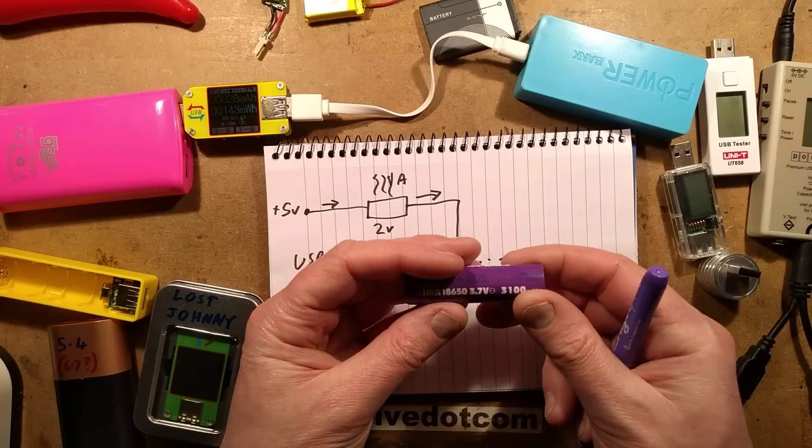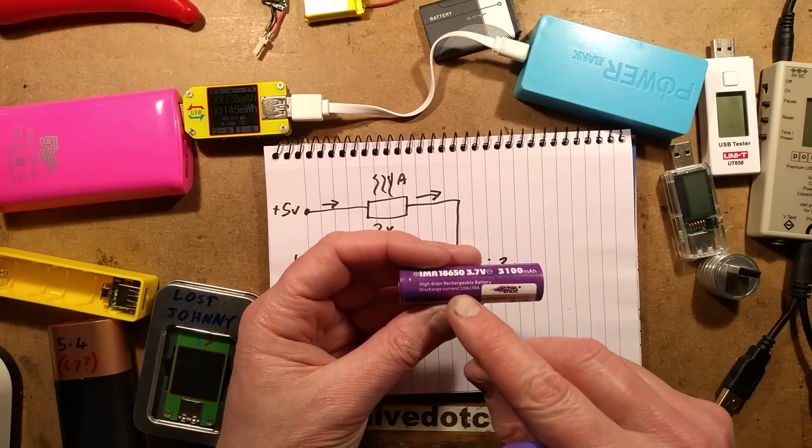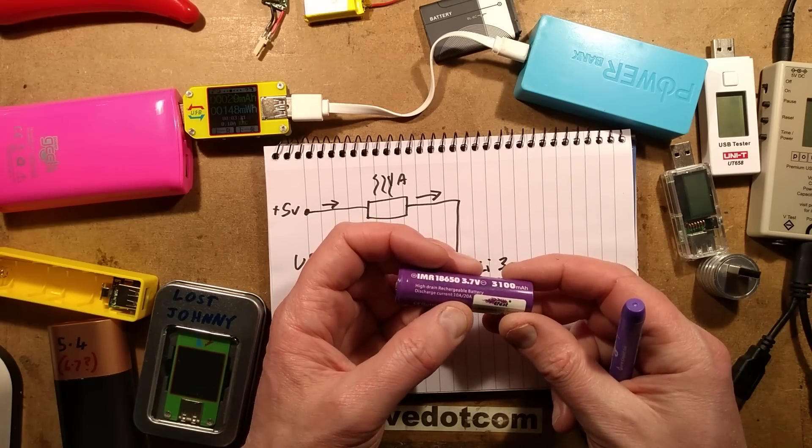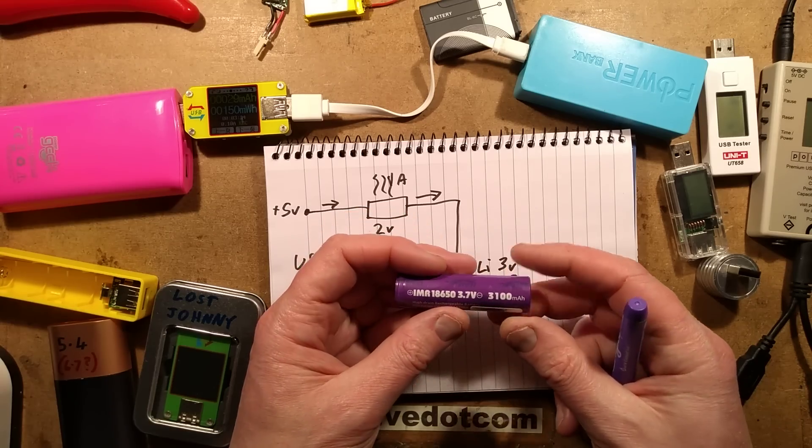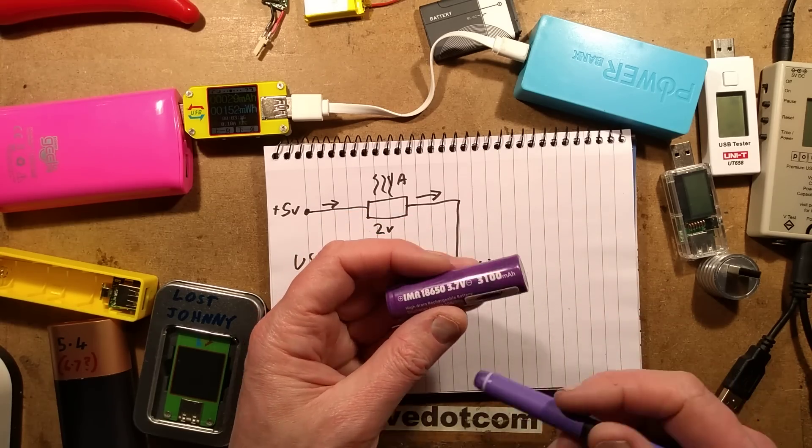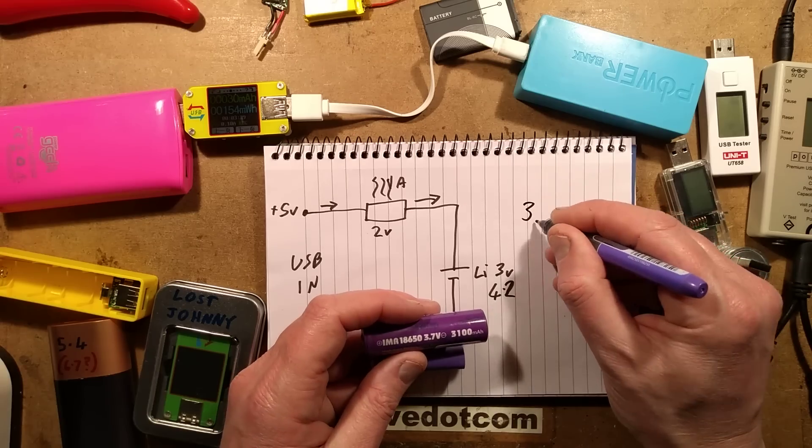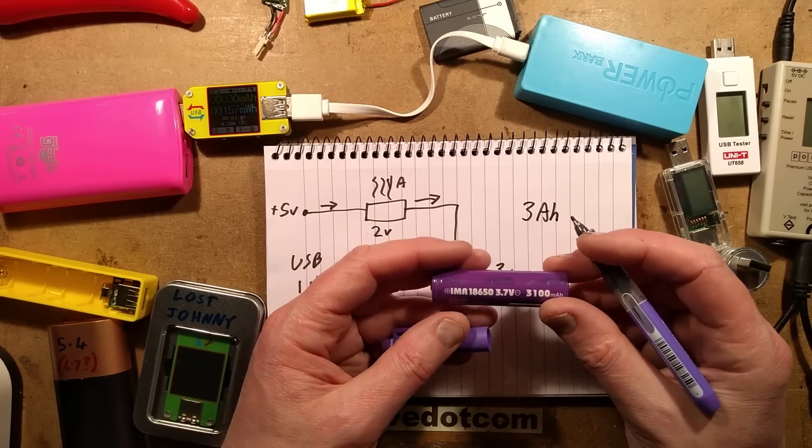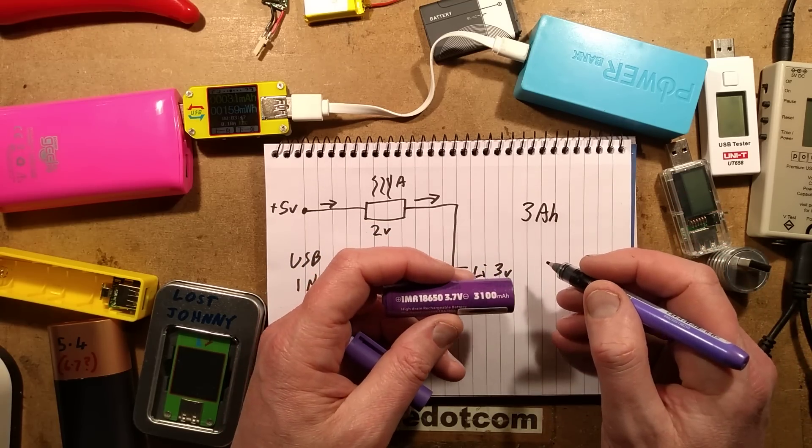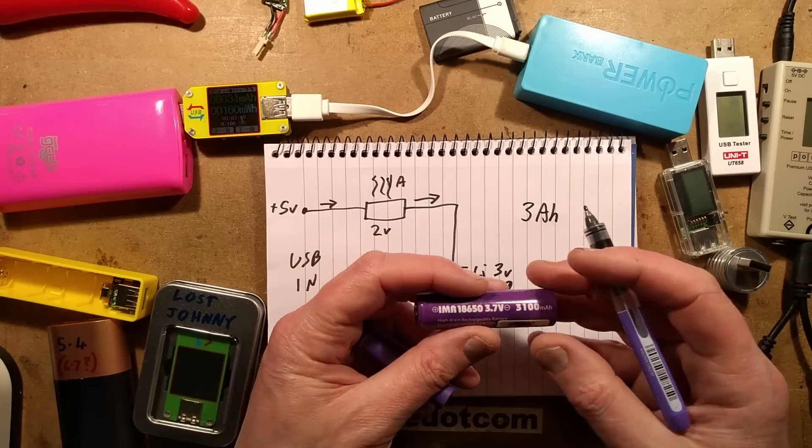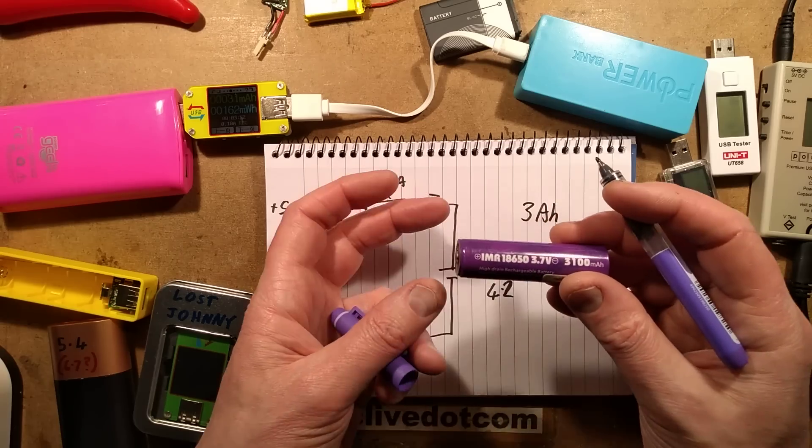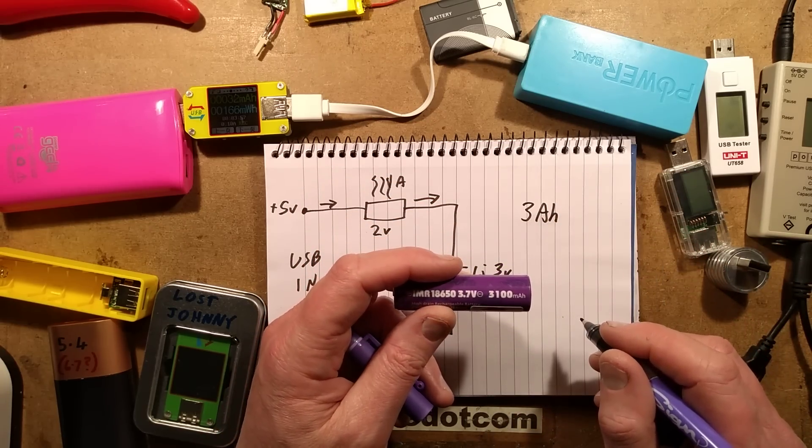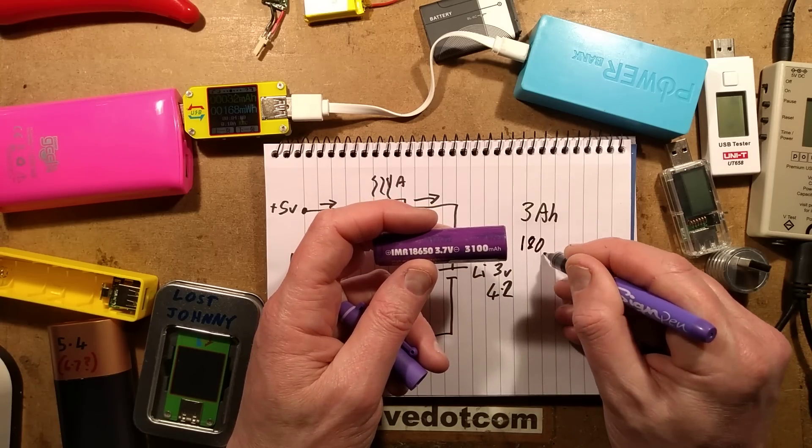They get a bad press because they have this amazing energy density. This is an E-Fest cell rated for a discharge current of 10 to 20 amps. It's rated over 3 amp hours, which means it can put out an amp for 3 hours or 3 amps for 1 hour. But if you shorted it out and it put all its energy out in 1 minute, that would potentially be 180 amps for a minute.